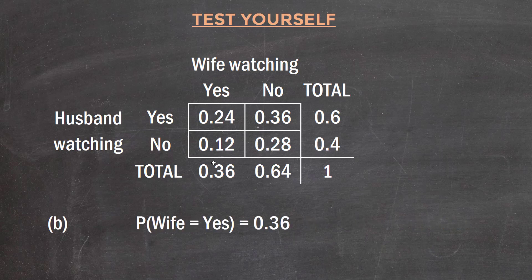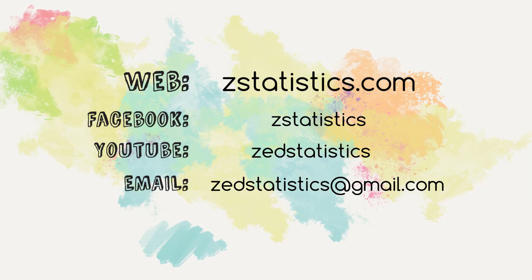The second part asks for the probability that the wife is watching HBO at all. That's just a marginal probability, which you can read from the table as 0.36. Constructing a table makes things really easy, and you can answer any question.